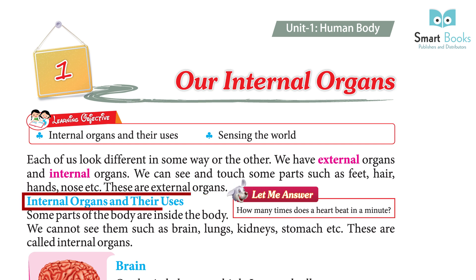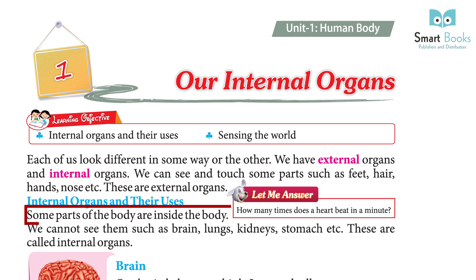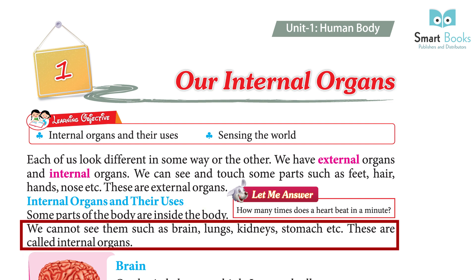Internal organs and their uses. Some parts of the body are inside the body. We cannot see them, such as brain, lungs, kidneys, stomach, etc. These are called internal organs.